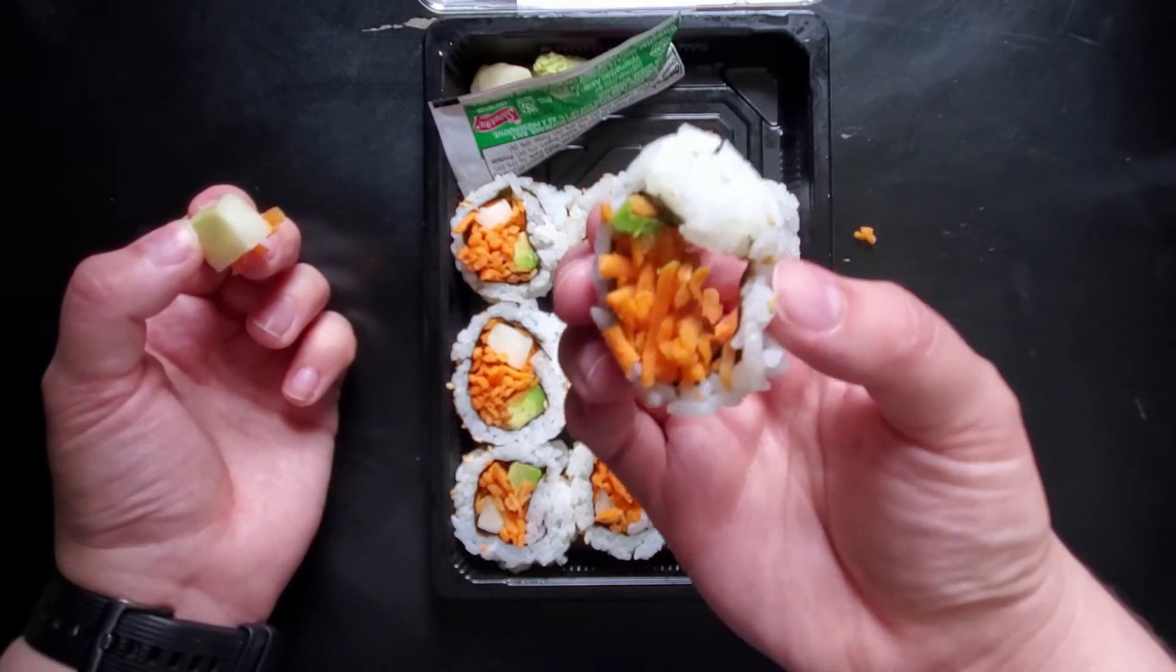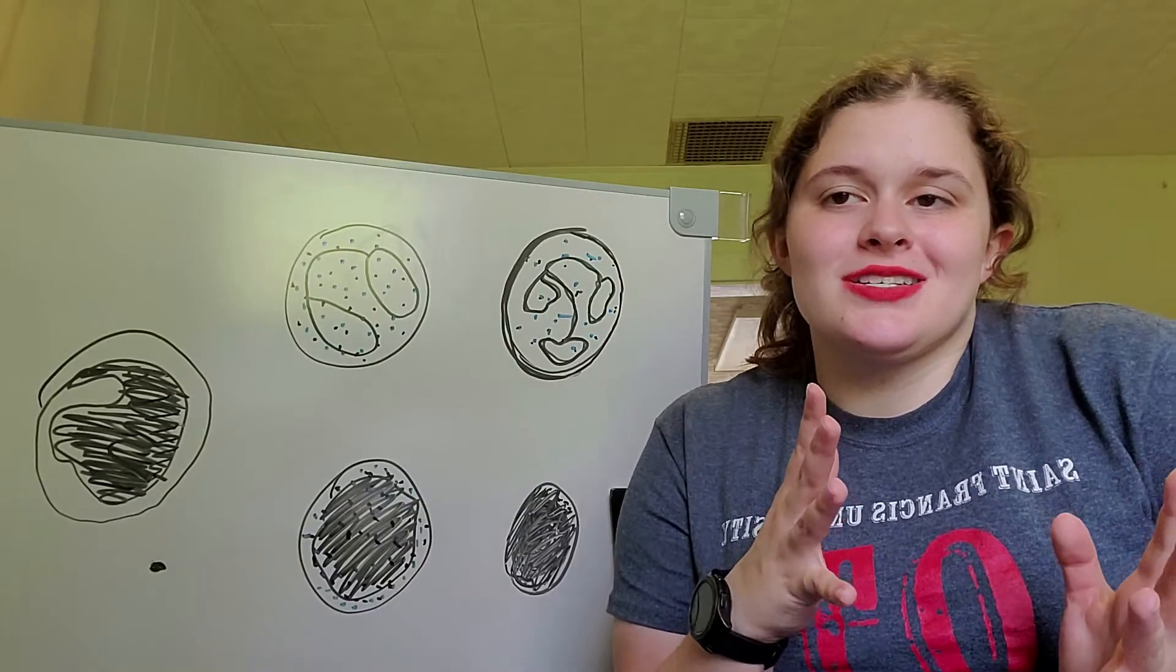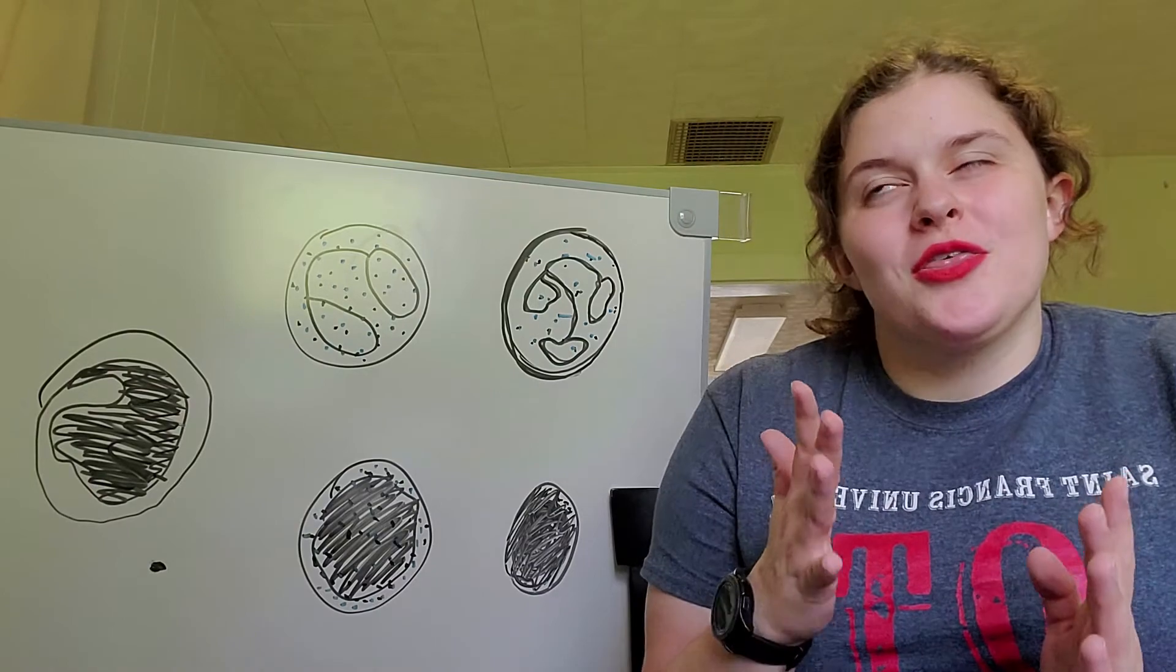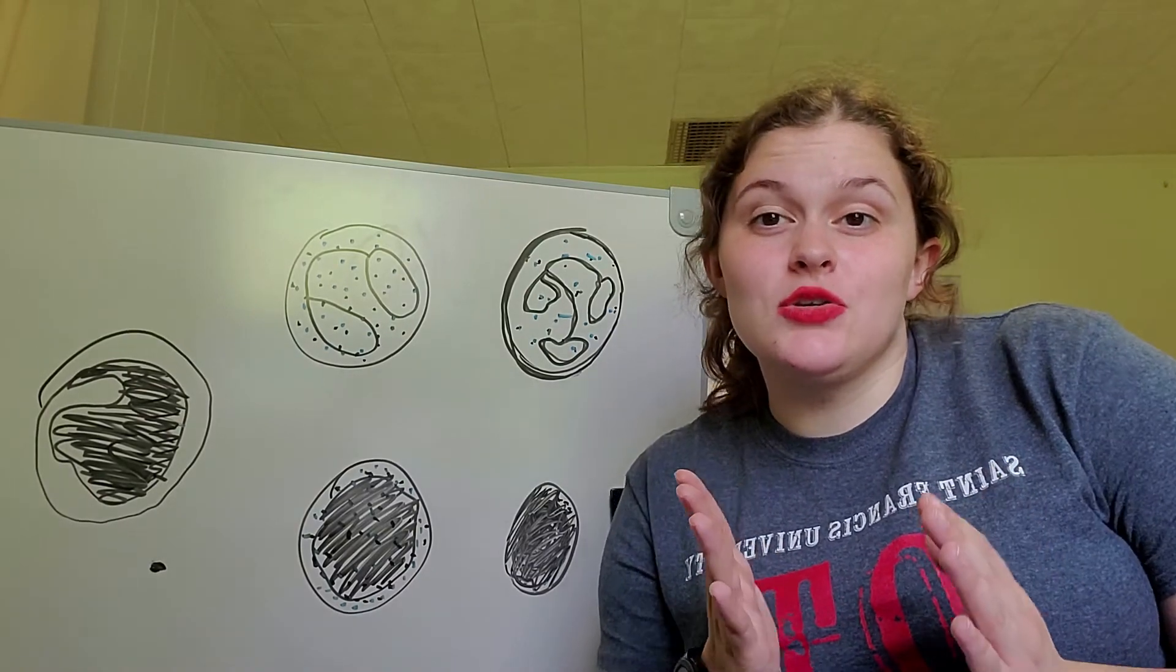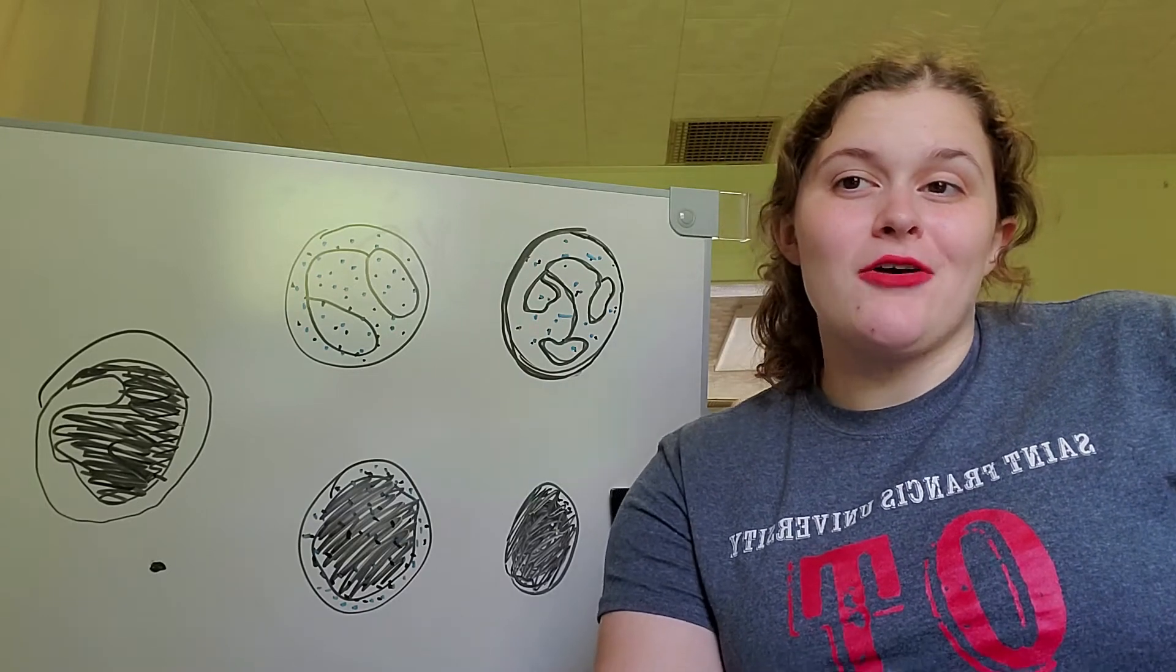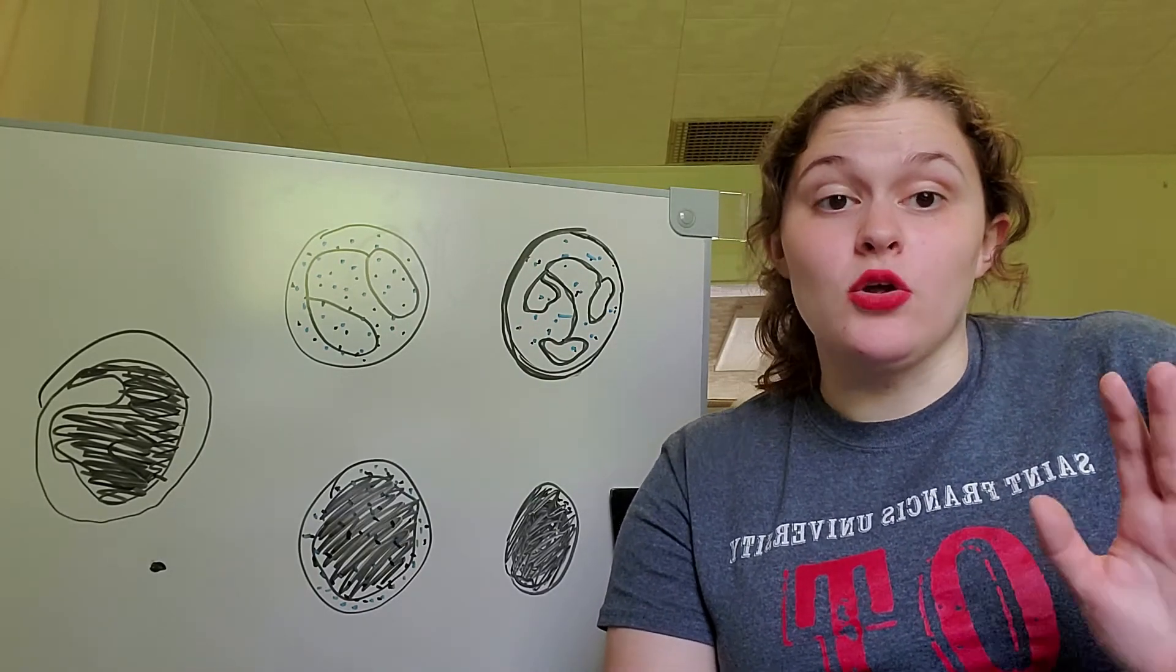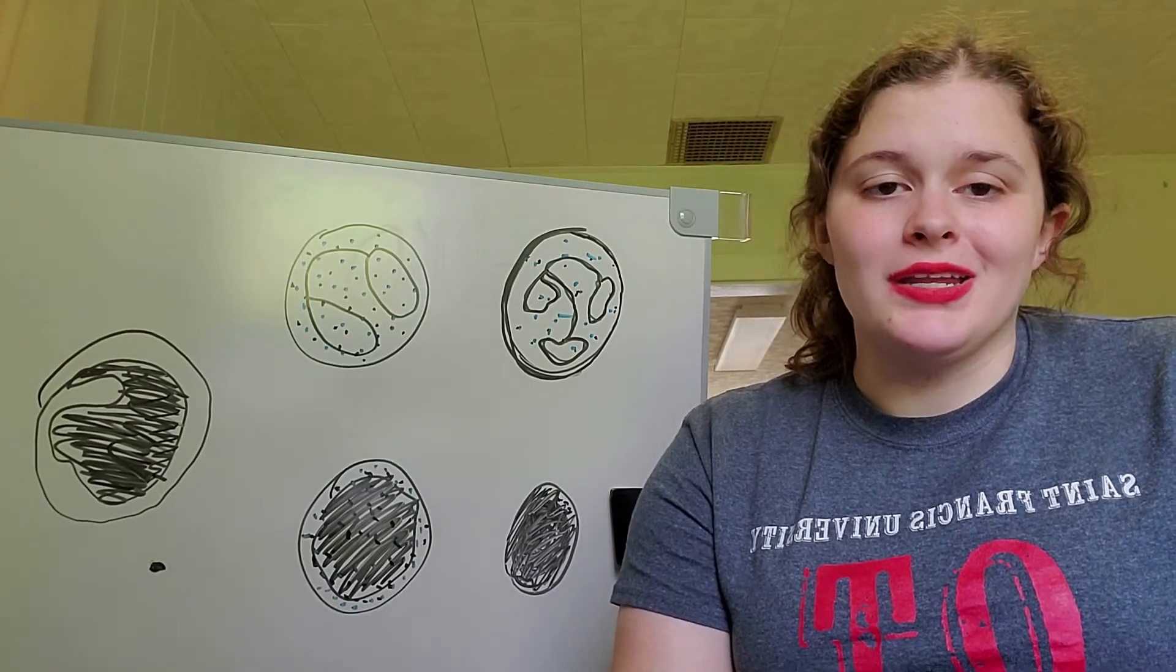A healthy person is anywhere between 3,500 to 9,600 cells per microliter. If you're under that white blood cell count, then leukopenia might be present.